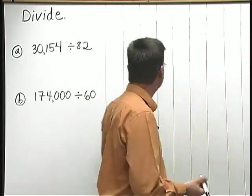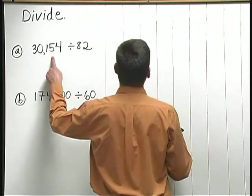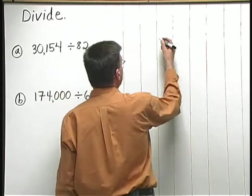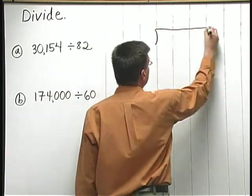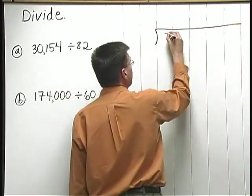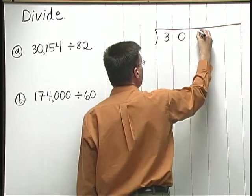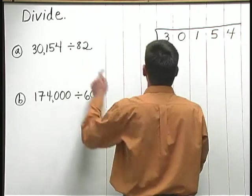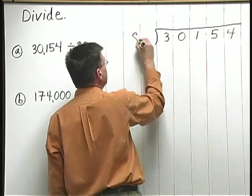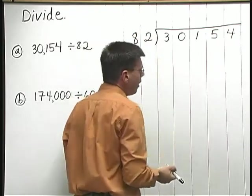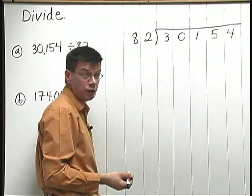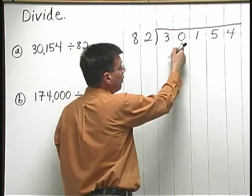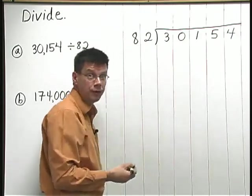Let's set up the long division box for our first problem. So, 30,154 goes inside the long division box. 3, 0, 1, 5, 4. Out in front goes the 82. We can also read this division problem as 82 divided into 30,154.